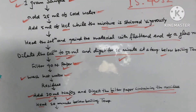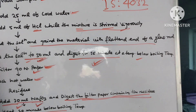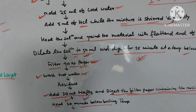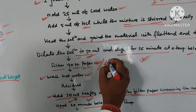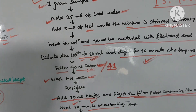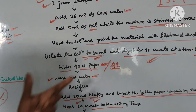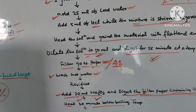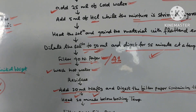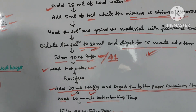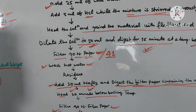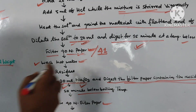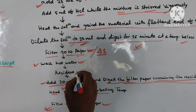Dilute the solution to 50 ml and digest for 15 minutes at below boiling temperature. Then filter the solution using No. 14 filter paper. If No. 14 filter paper is not available, you can use No. 41 filter paper. During washing, when you wash the sides of the filter paper, use hot water - this is very important when you do any type of filtration.